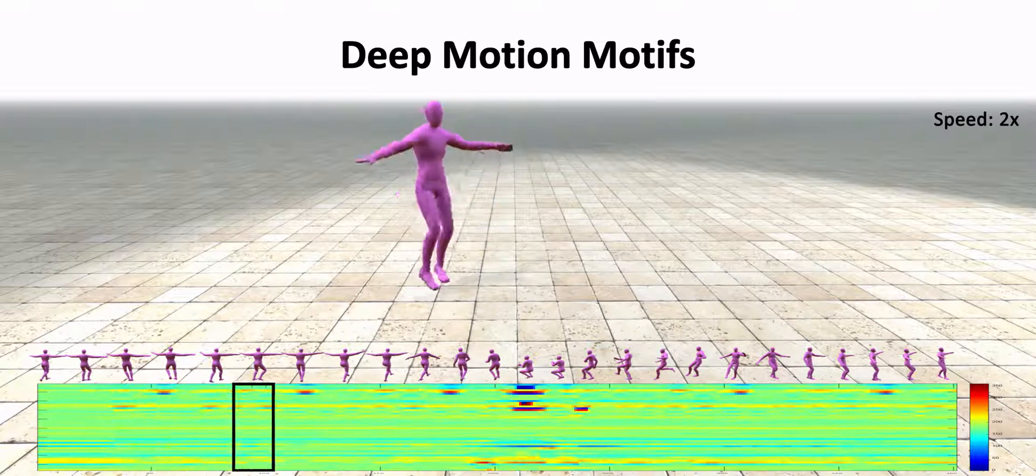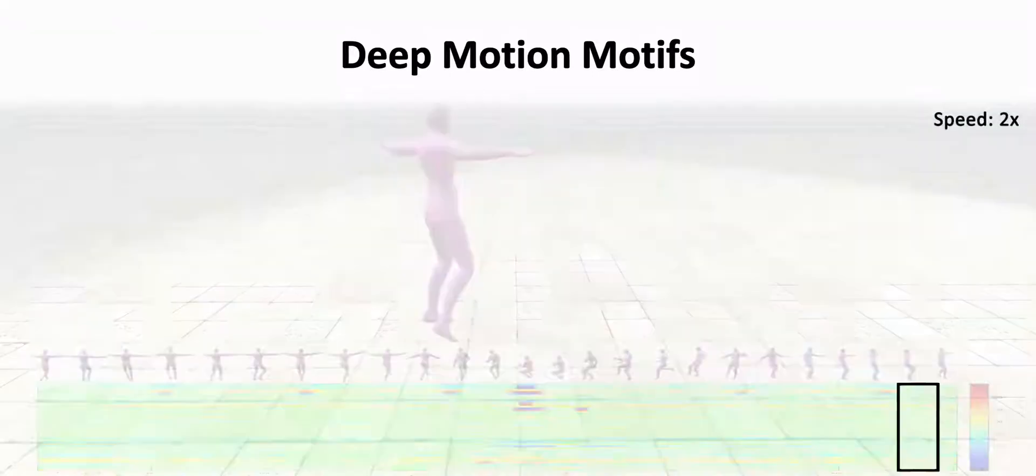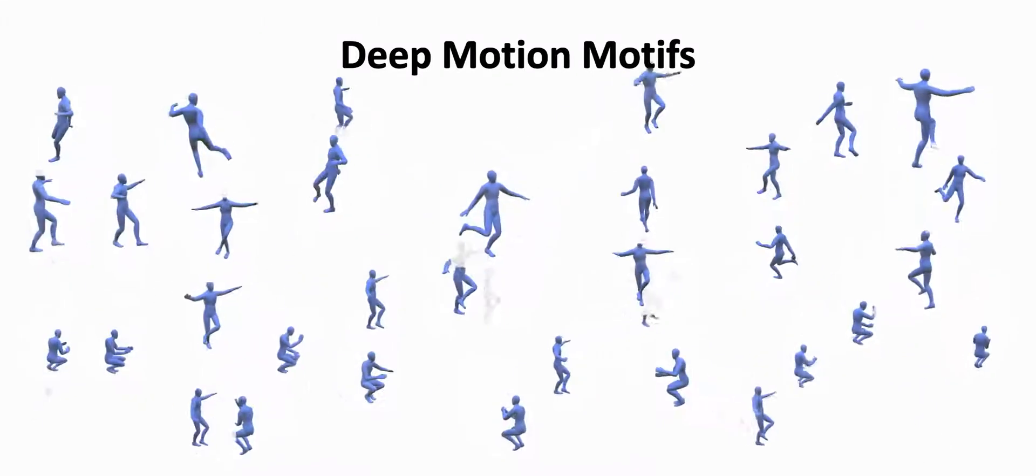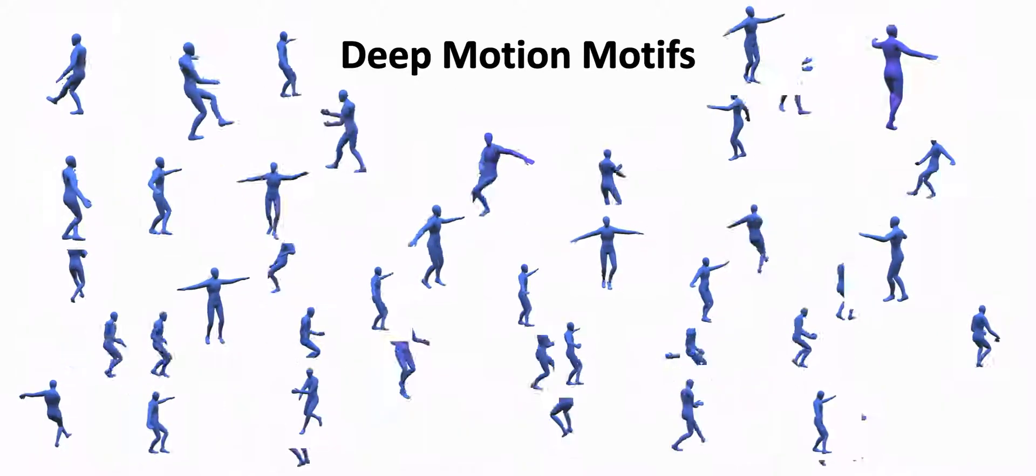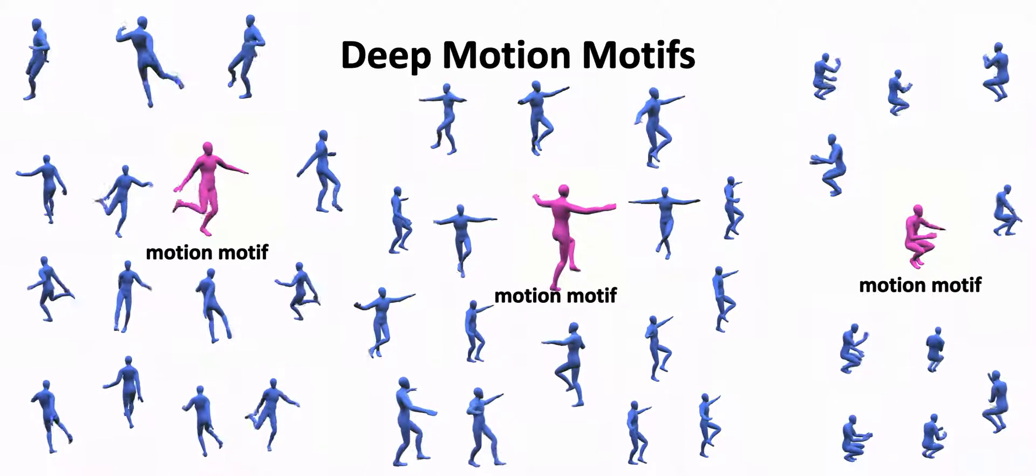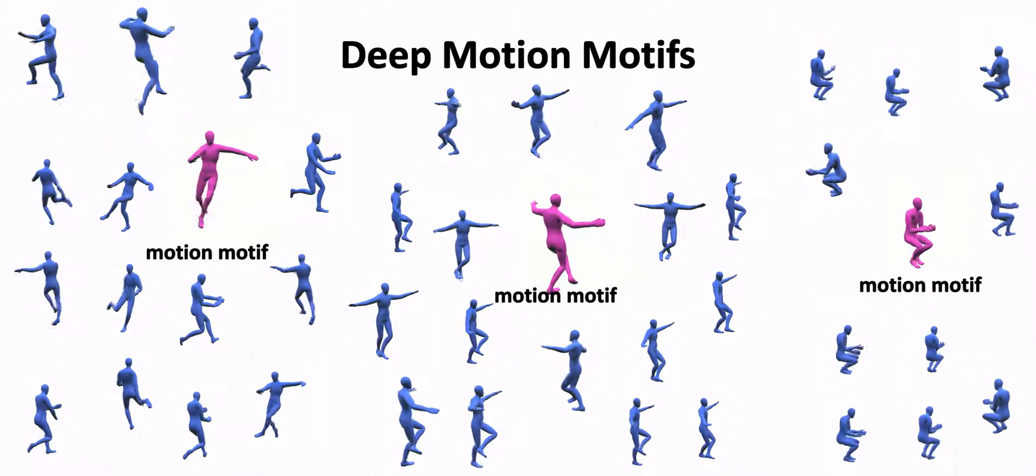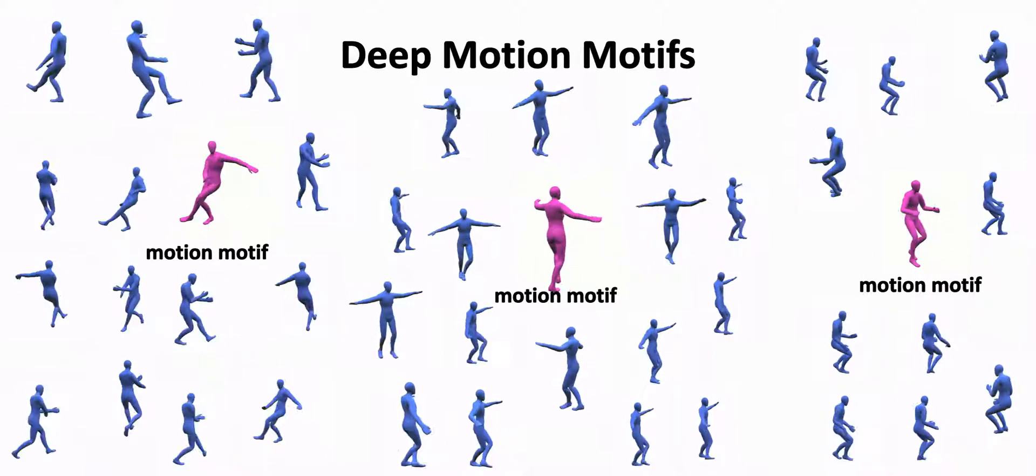To define the signature, we first extract a set of overlapping motion words from the whole motion sequence, and then distill the motion words to a set of motifs, which are descriptive and frequent words. Motifs are found by clustering the motion words in feature space.